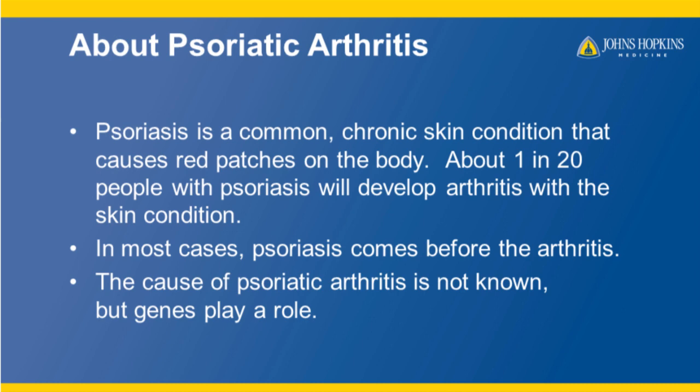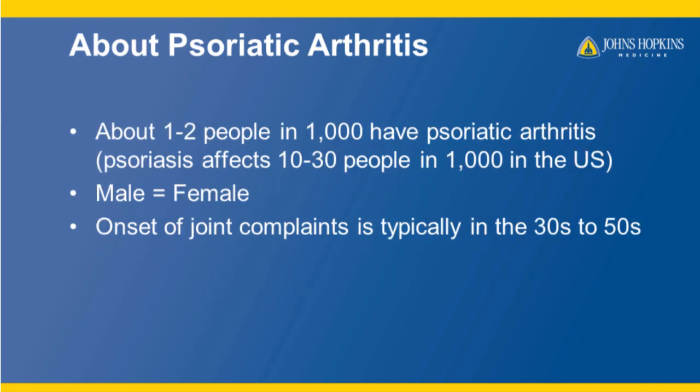In most cases, psoriasis comes before the arthritis. The cause of psoriatic arthritis is not known, but genes may play a role. About one to two people in one thousand have psoriatic arthritis. Psoriasis itself affects ten to thirty people in one thousand in the United States. Males and females equally get this condition, and the onset of joint complaints is typically in the thirties to fifties.